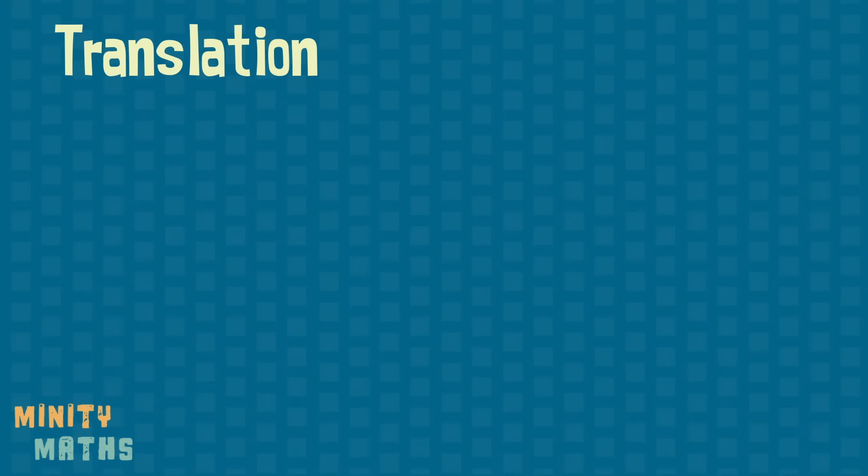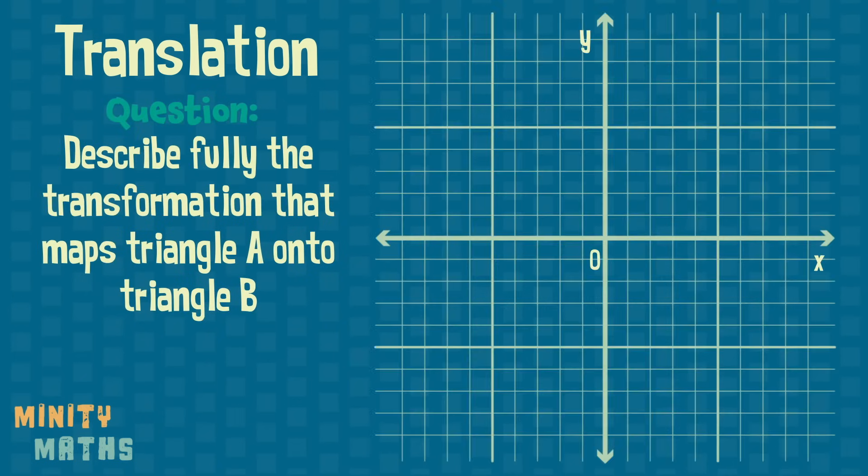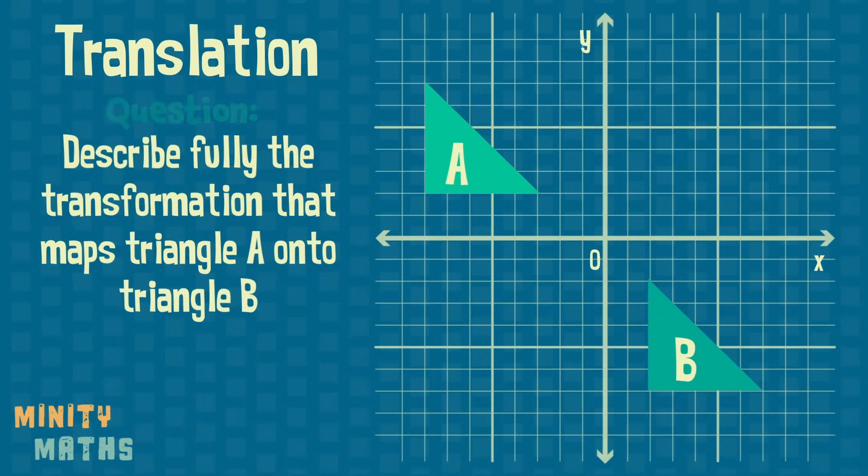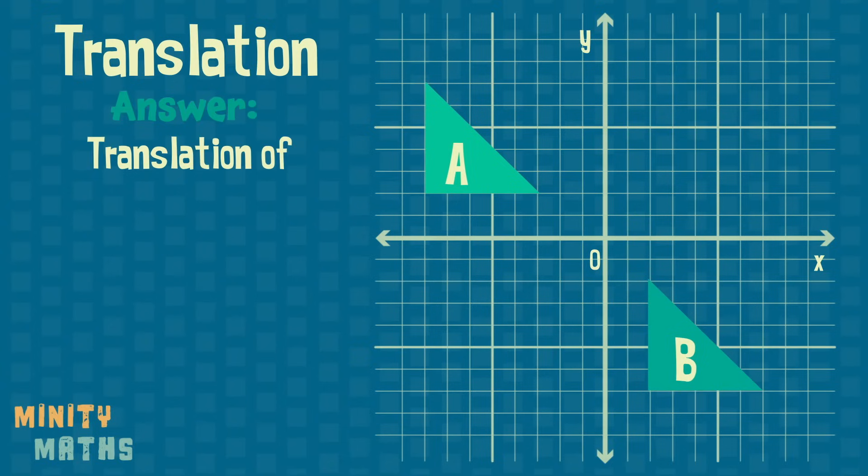Let's look at an example. We need to describe how shape A translated to shape B. The description must include two details: the change in position horizontally and the change vertically.